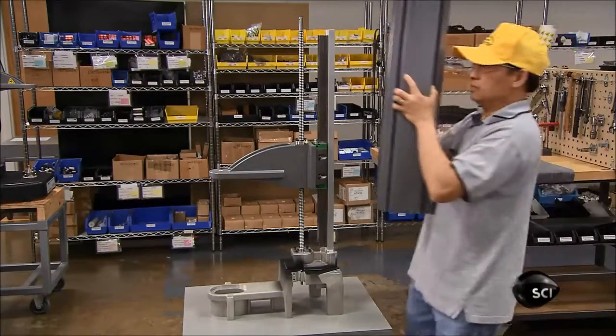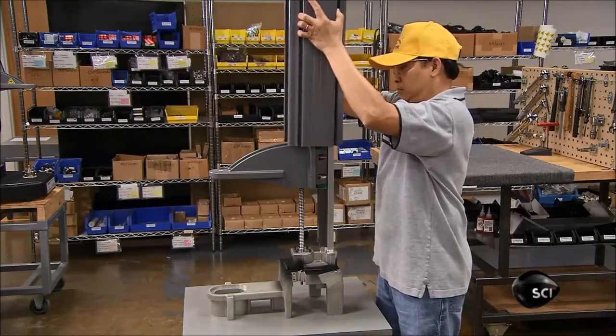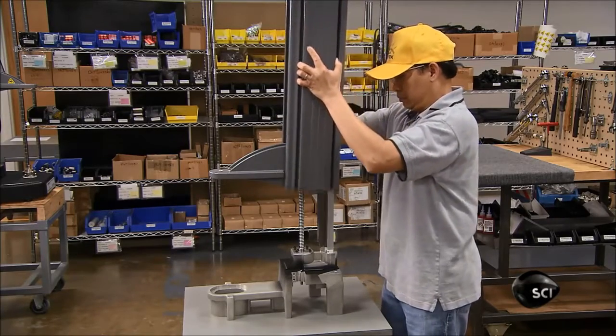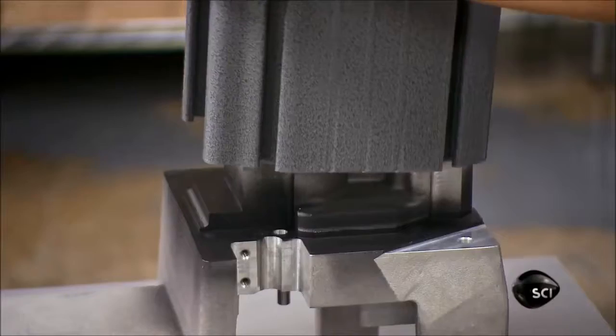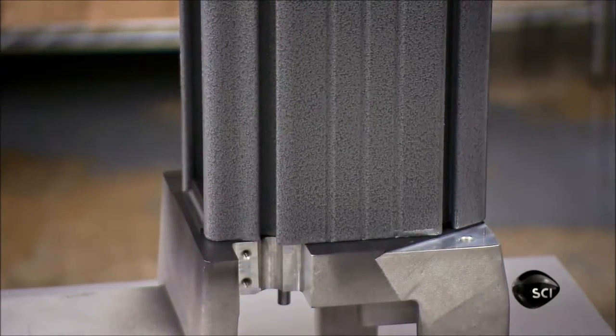He lowers an aluminum cover over the force arm assembly and secures it to the base. One side of the casing is open. He'll install an accordion-style rubber curtain to it later.